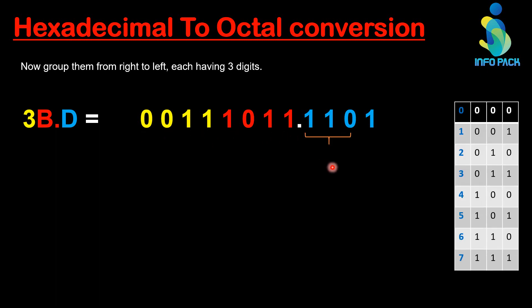For example, our first group is 110 and this is equal to 6 in octal table. Our next group is 1, but we have to complete this group by placing two zeros here. Now the octal number is 4 in this group. Now make the group of this binary.